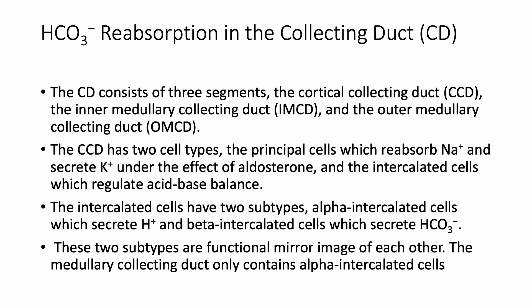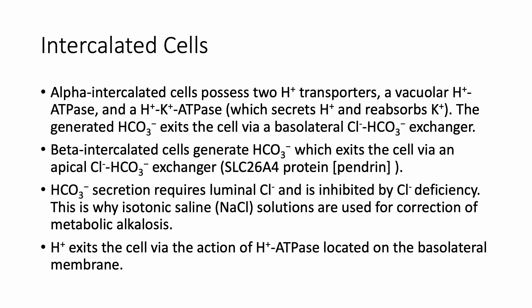Alpha intercalated cells have two hydrogen transporters: the vacuolar hydrogen ATPase and, less importantly, the hydrogen-potassium ATPase, which secretes hydrogen and reabsorbs potassium. The bicarbonate generated exits the cell via the basolateral chloride-bicarbonate exchanger. The beta intercalated cell is the mirror image: it generates bicarbonate and secretes it into the lumen via pendrin — the chloride-bicarbonate exchanger — while chloride enters the cell. Remember the name pendrin.